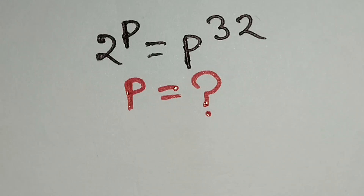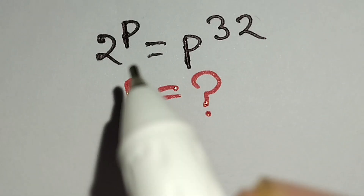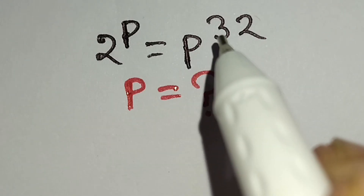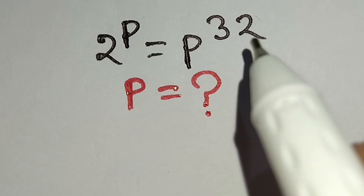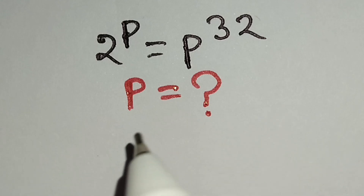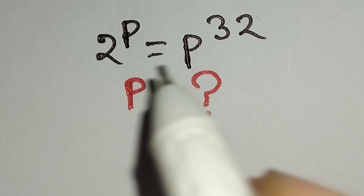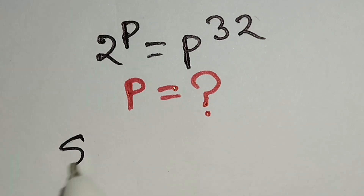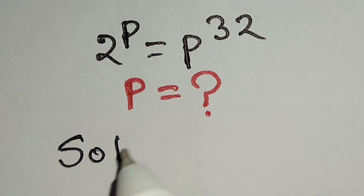Hello, this is a nice math problem. 2 to the power p is equal to p to the power 32, and we have to find the value of p. So let's start the solution.